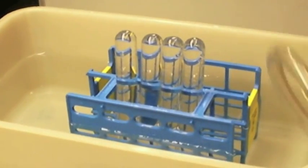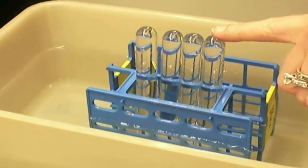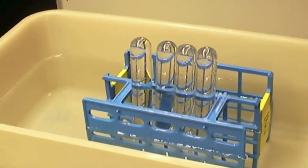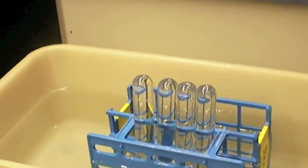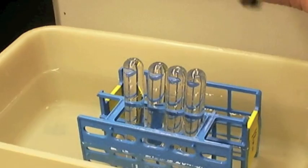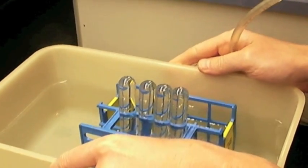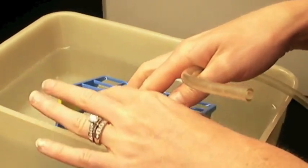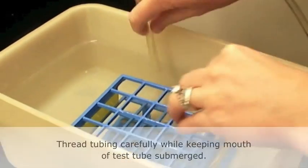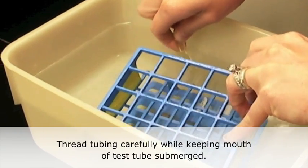Now, what we're going to do is thread the tubing through the collection tubes here, and the black stoppers are eventually going to go on the reaction tubes, but we don't need to worry about those for right now. In order to do this, I might turn my test tubes back on their side, keeping them submerged so I don't lose any of the water. And I'm going to snake the tubing up into the test tube.